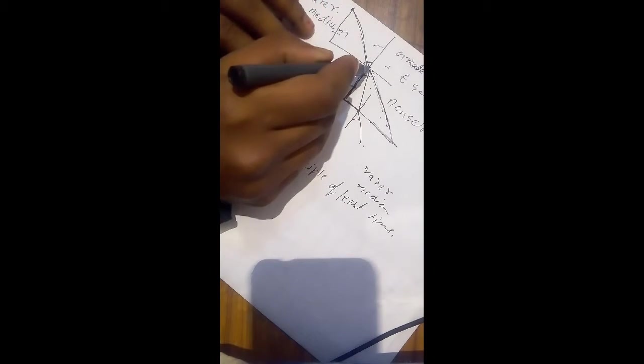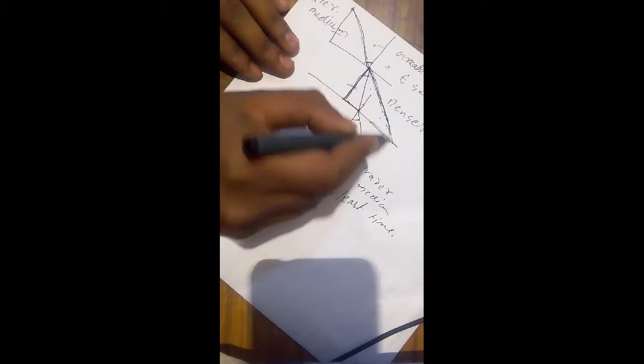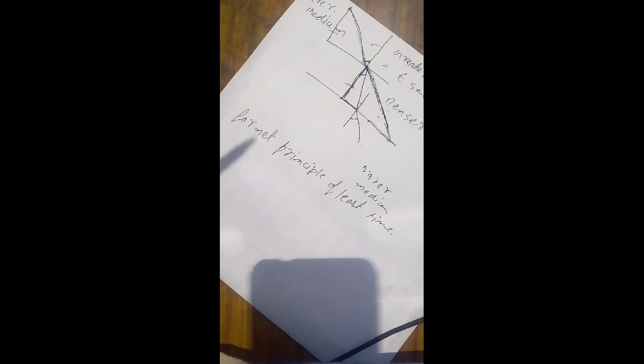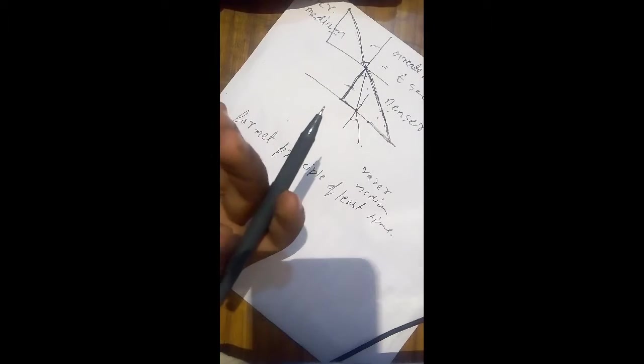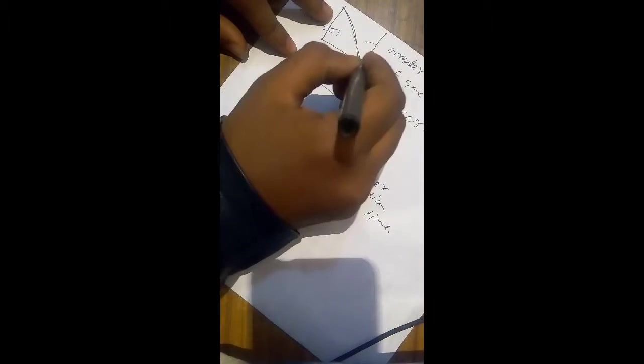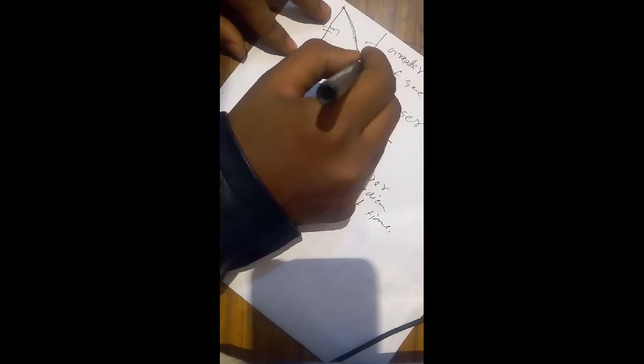But as it travels from rare to denser medium, the speed of light gets slowed. So if it continued this path, it will take more time. But light wants consistency in its time taken, so it bends toward normal.